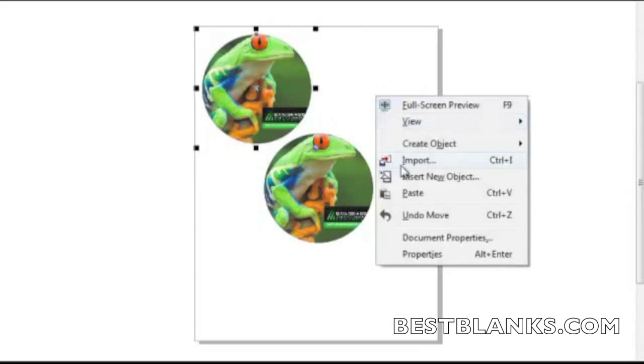The pasted image will land on top of the existing image. Left click on the image and drag it to separate it from the one below. Now repeat the process until you have maximized the print area.